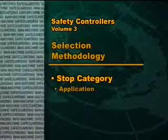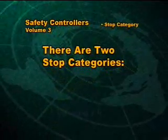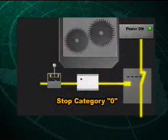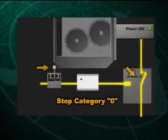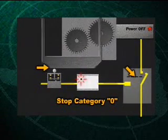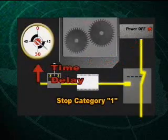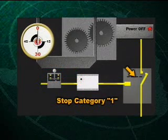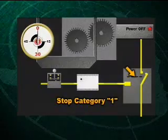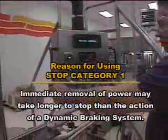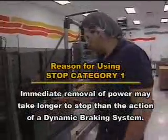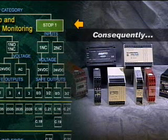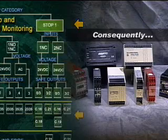Next: stop category desired. There are two machine stop categories, zero and one. Stop category zero is when power is immediately removed from the controlled equipment upon actuation of the safety input device. Stop category one is when, following a stop command, a time delay of up to 30 seconds is allowed before the removal of power. This delay is often desirable in drive systems where the immediate removal of power may result in a longer stop time than could be achieved by the action of a dynamic braking system. Consequently, it is essential the user choose a safety controller compatible with the stop category desired.